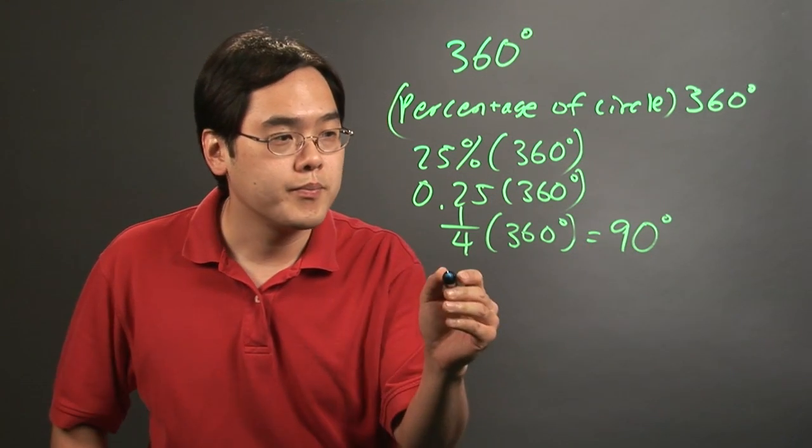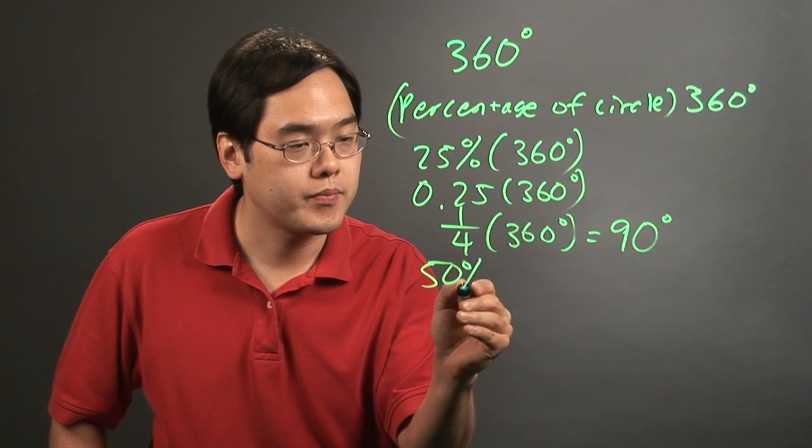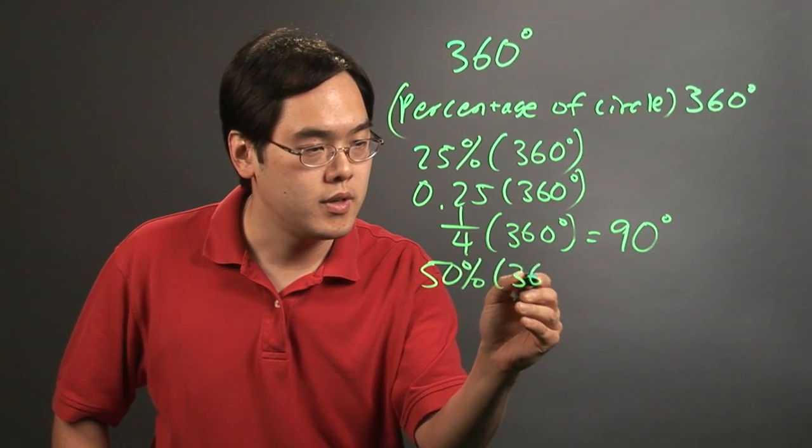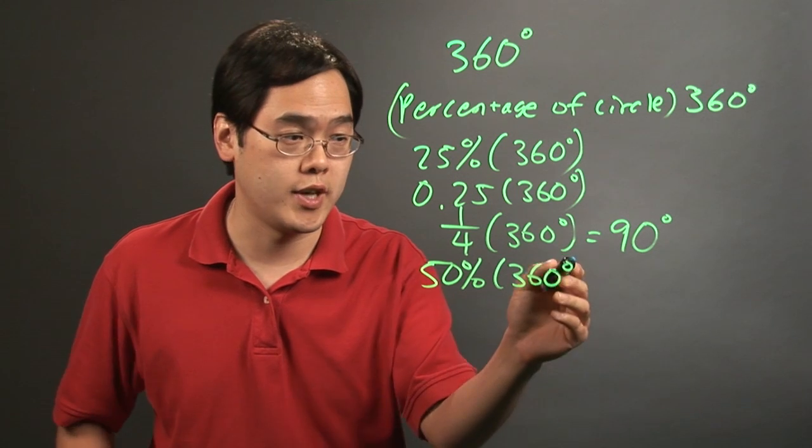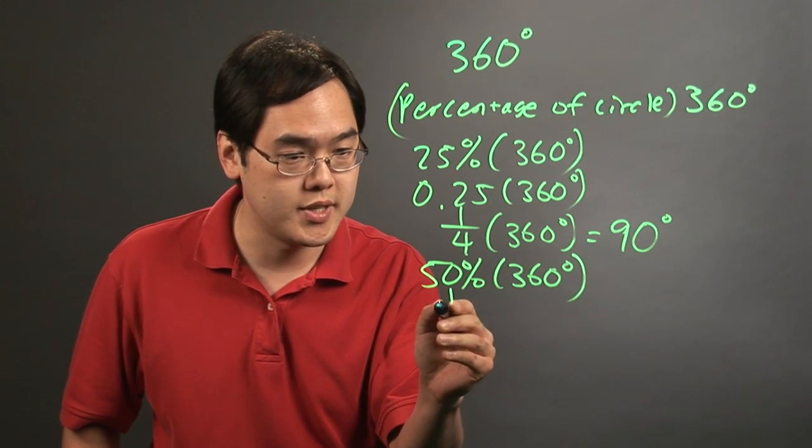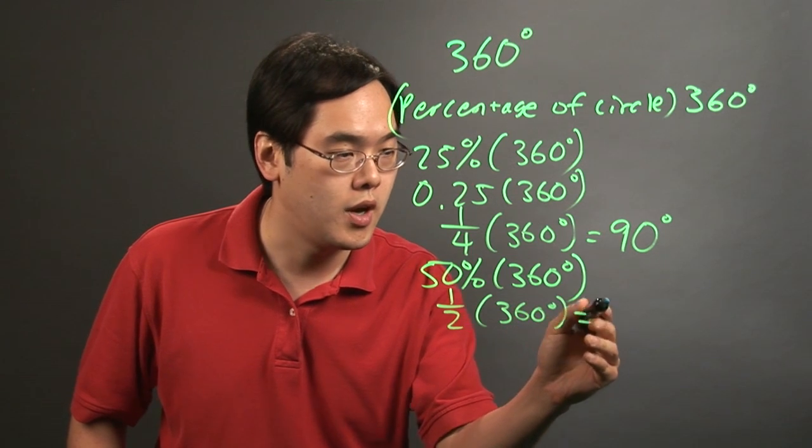Or if you want to think about half or 50% of the circle, you want to multiply by 360 to find out the measure of the central angle there. 50% is like saying 1/2 times 360 and that'll give you 180 degrees.